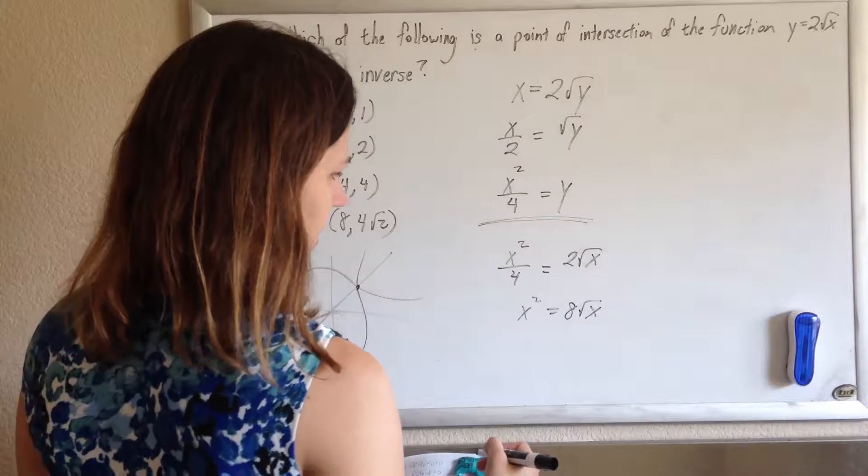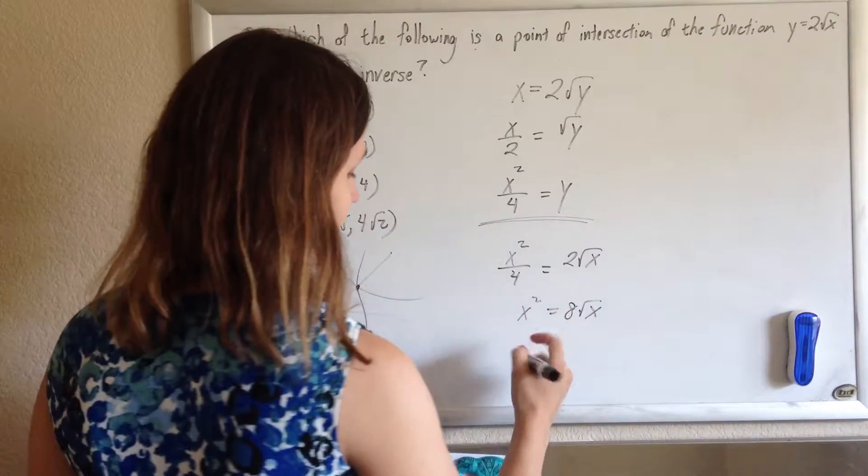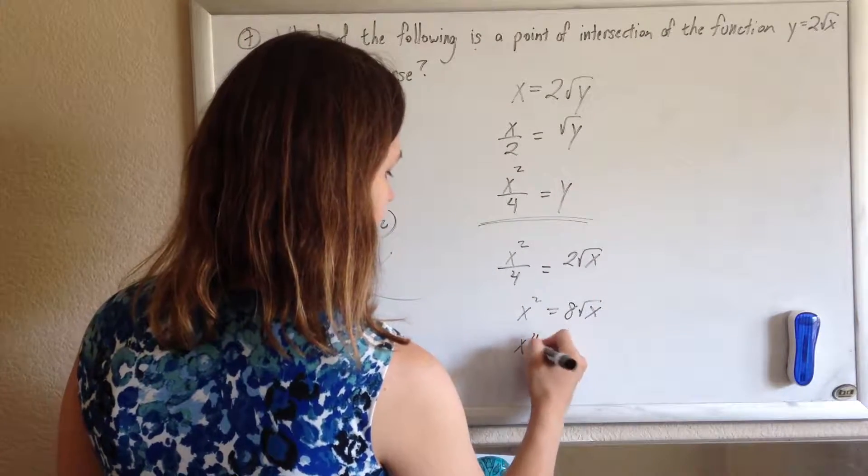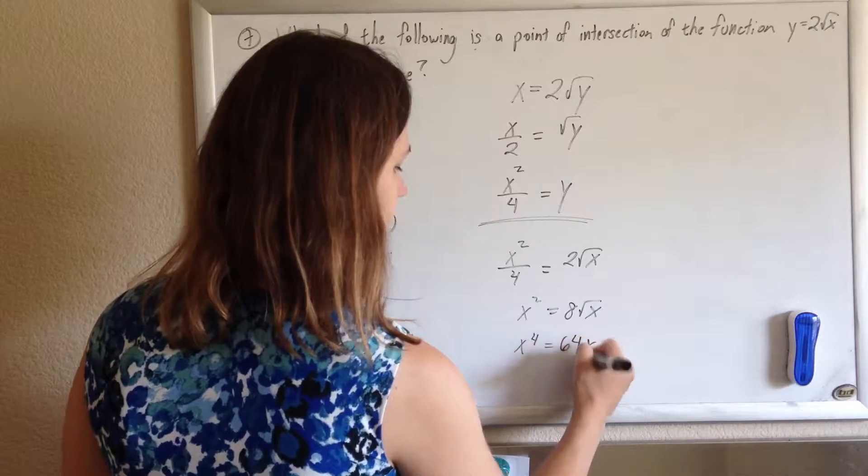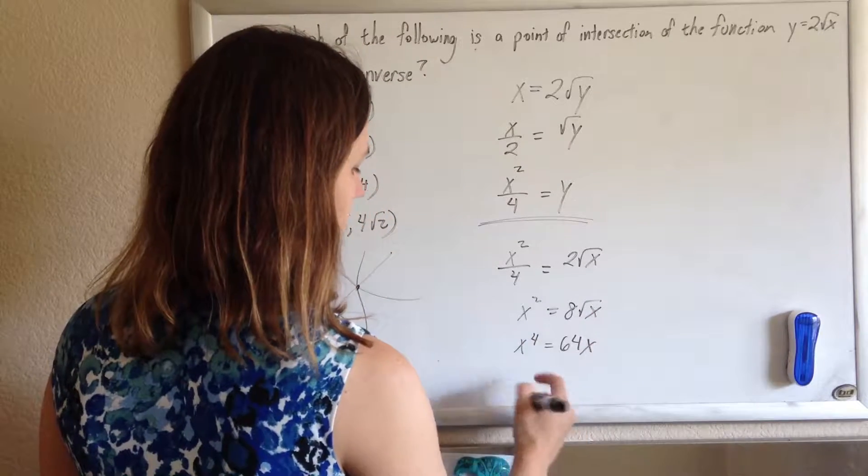And, let's see, what else can I do? Maybe I can square both sides again. So, I have x to the 4th equals 64x. Squaring both of those.